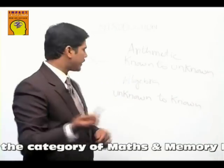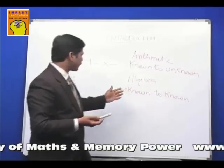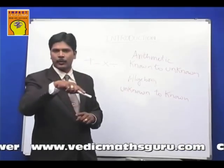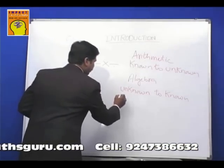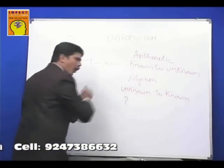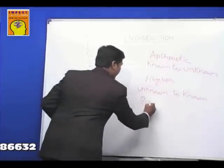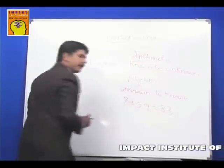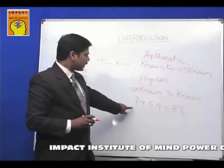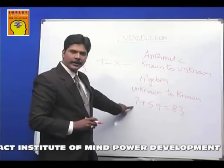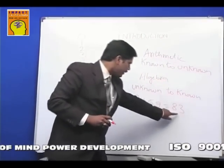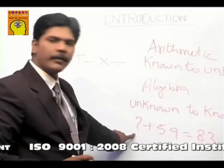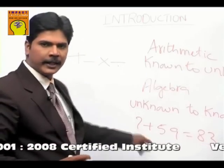Now let us see what algebra is. Algebra is known as 'unknown to known' — the other way around from arithmetic. What is unknown to known? For example: what is that number which, when added to 59, will give you 83? There is an unknown number we are trying to calculate. You know the answer, you know one of the numbers, but the other number we do not know — so we are trying to calculate that.